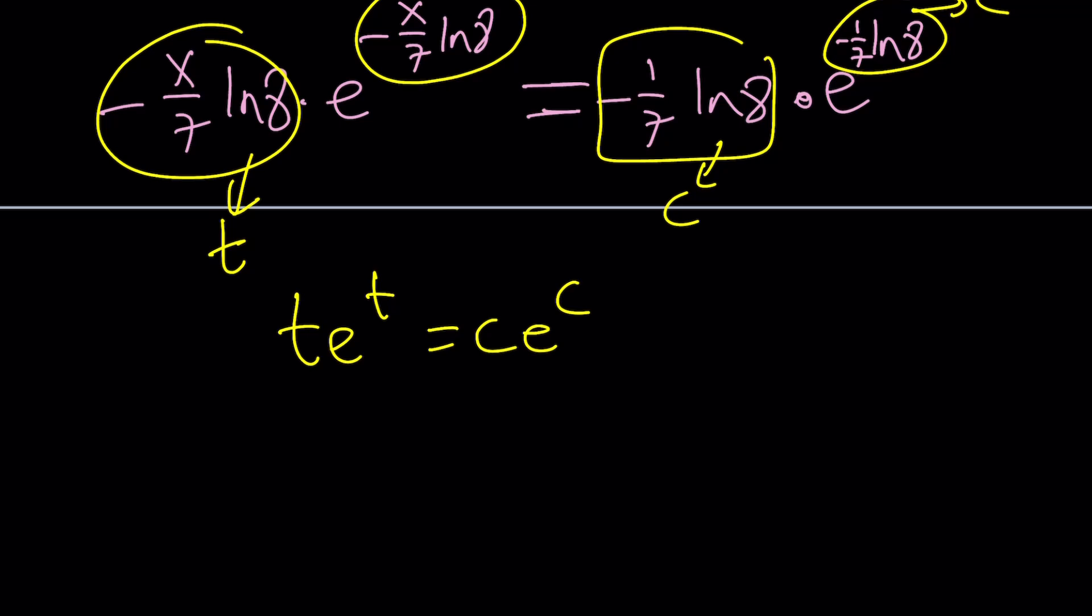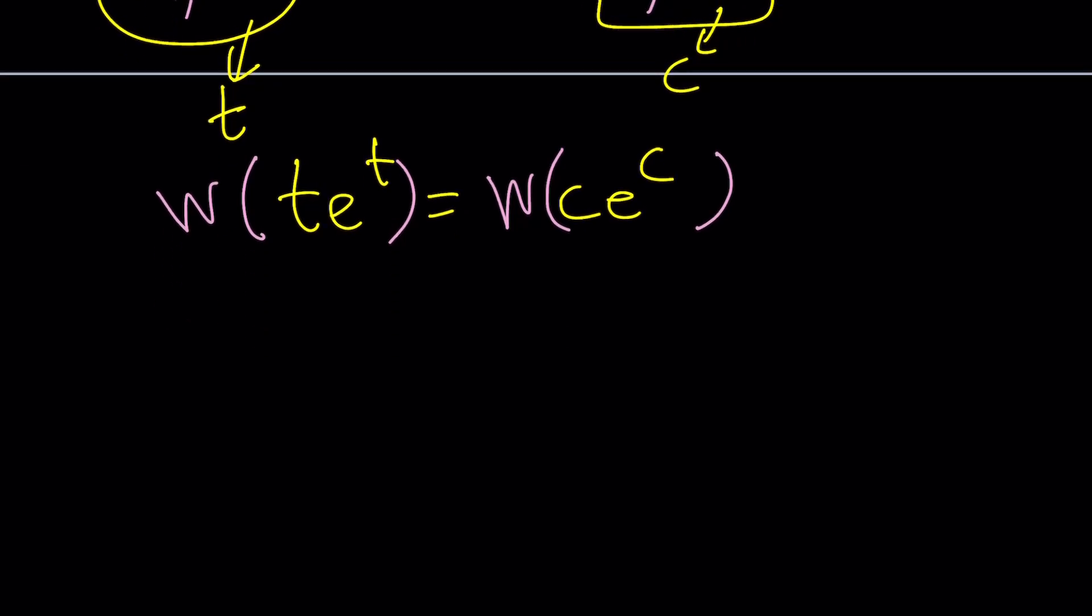Here comes the super duper special function, which is called Lambert's w function. So we're going to w both sides. And that's going to give us what we want. Let's briefly talk about it. I think in a previous video we talked about this. We said that if you Lambert w t e to the t, you get t as a result. It's kind of like the inverse function for this. So from here, we're going to get t equals c. Very simple. So if your input is t e to the t, you're going to get t. If it's c e to the c, you're going to get c.